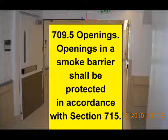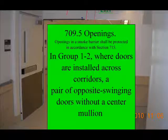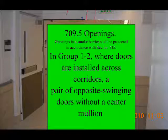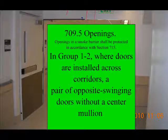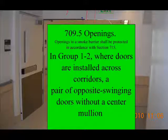We're looking at chapter 7 and we're going to get all of our answers. Notice that we've got a pair of doors right here. This is a corridor, and this happens to be a smoke barrier that we're looking at. Within about five minutes, you'll know about the door swings. Here we go — 709.5: in Group I2, where doors are installed across corridors, a pair of opposite swinging doors without a center mullion are required.